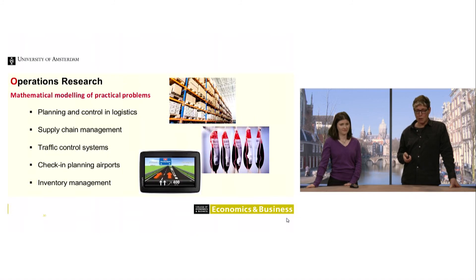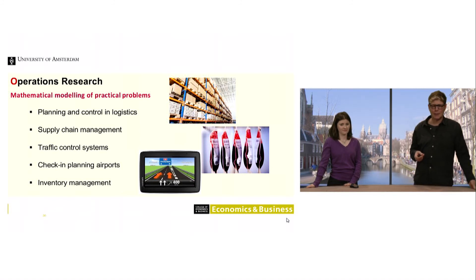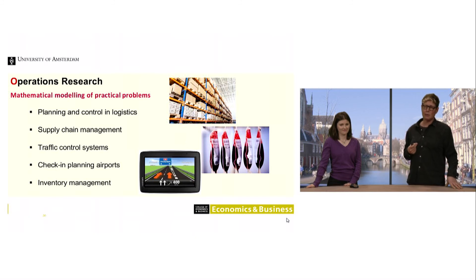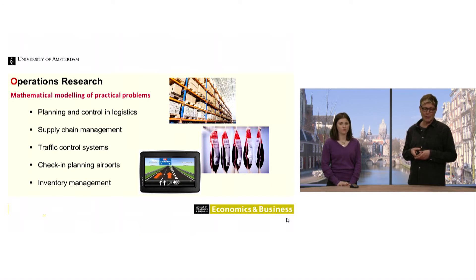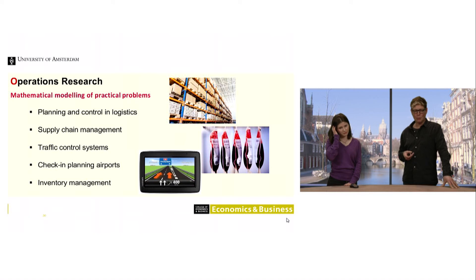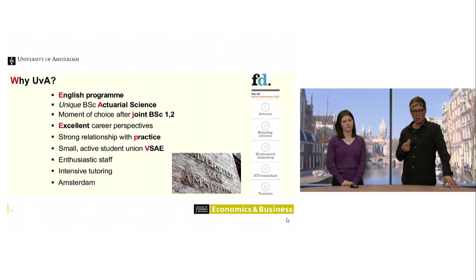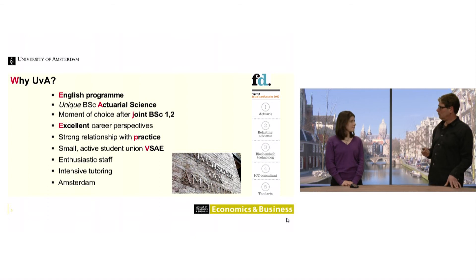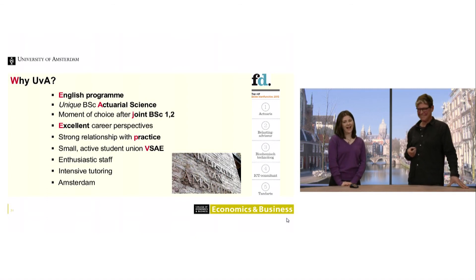Operations Research is about mathematical modeling of practical problems — logistics, supply chain management, traffic control systems, check-in planning at airports, anything that has to do with planning and scheduling. A well-known example: TomTom routing. Getting your vehicle from A to B is one of the most renowned examples where Operations Research has played a major role.